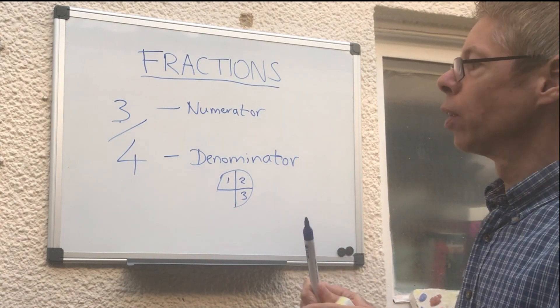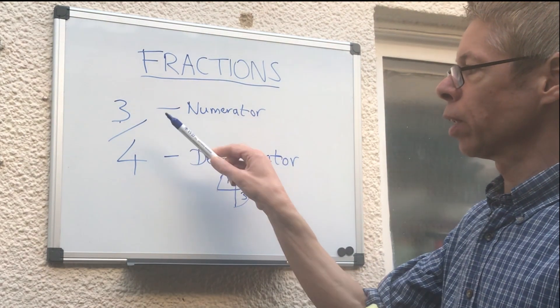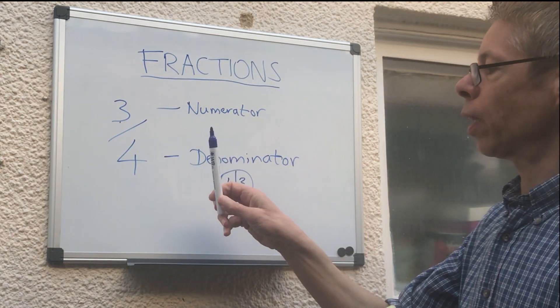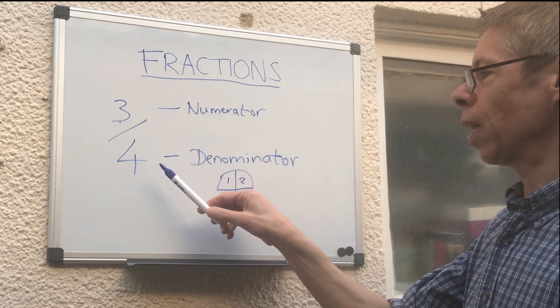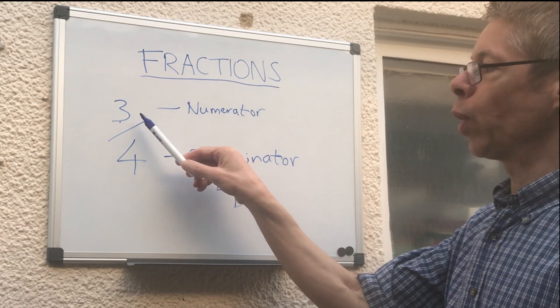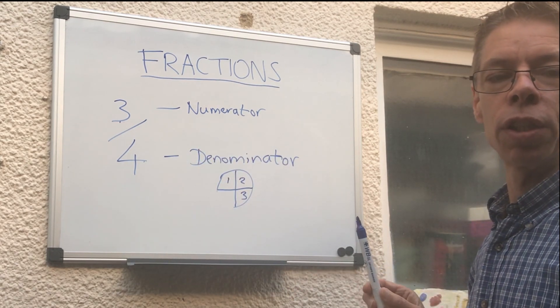You can think of it as a certain number of biscuits shared by a certain number of people, or you can think of a pizza that has been cut into a certain number of pieces—for example four—and we've got three of the pieces. So that's our introduction to fractions.